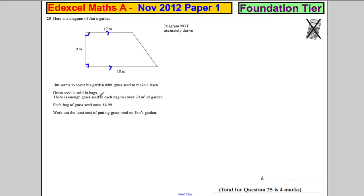Jim wants to cover his garden with grass seed. Grass seed is sold in bags. There is enough grass seed in each bag to cover 20 meters squared of garden. Each bag costs £4.99. Work out the least cost of putting seed on there.